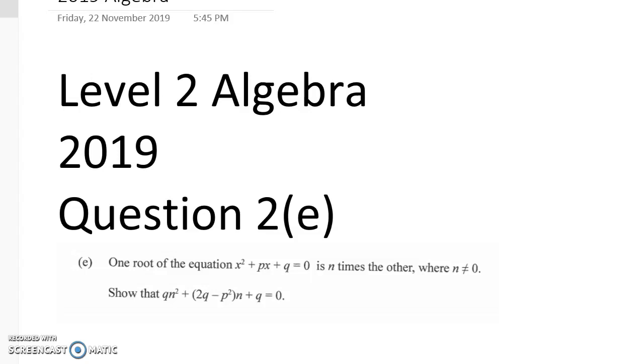The first one I'm going to do is question 2e, where we're told from algebra that one root of the equation is n times the other root. So we've got a quadratic here, and we're told one root is n times the other, and n is not equal to 0. And we have to show that this is equal to 0.